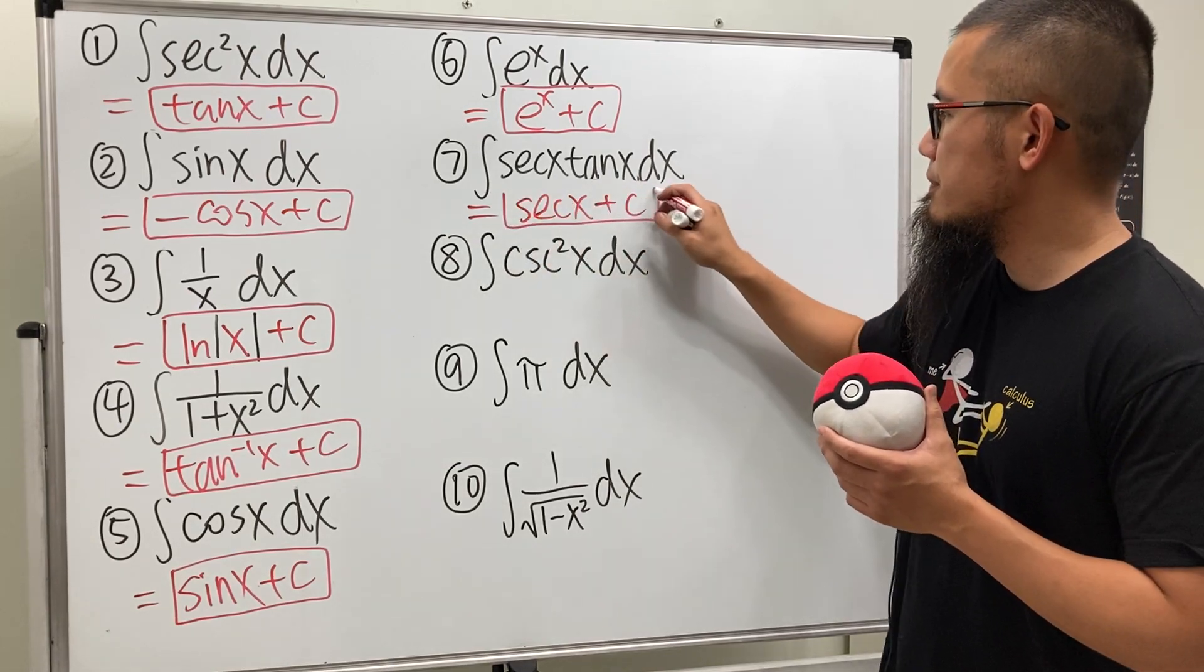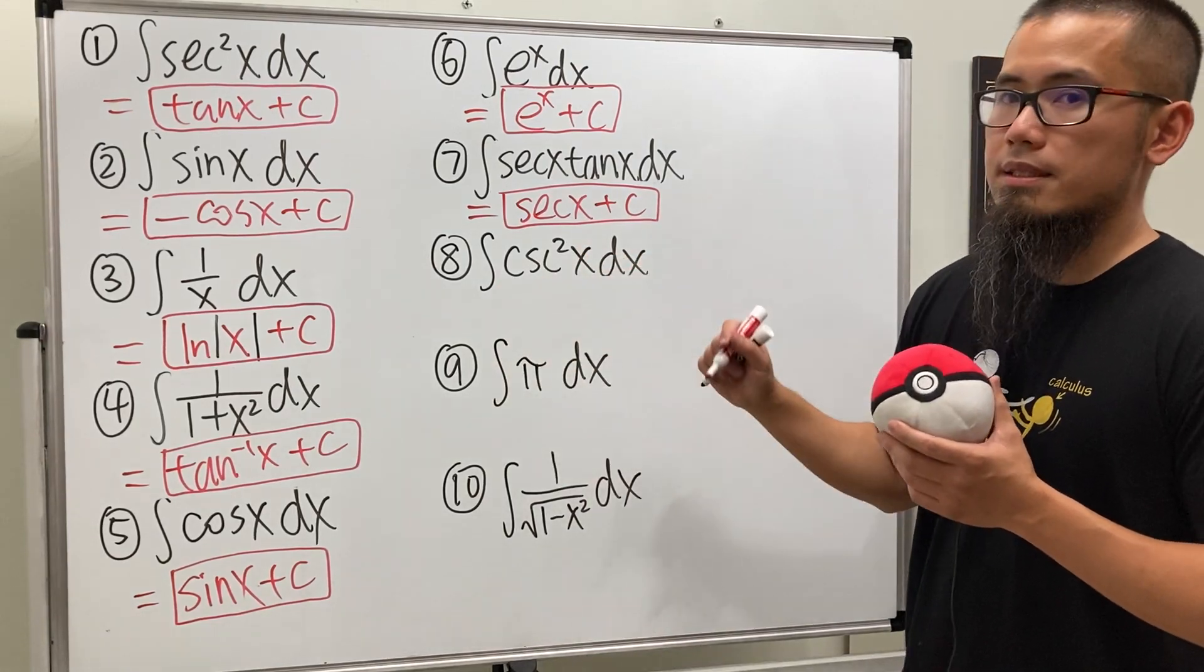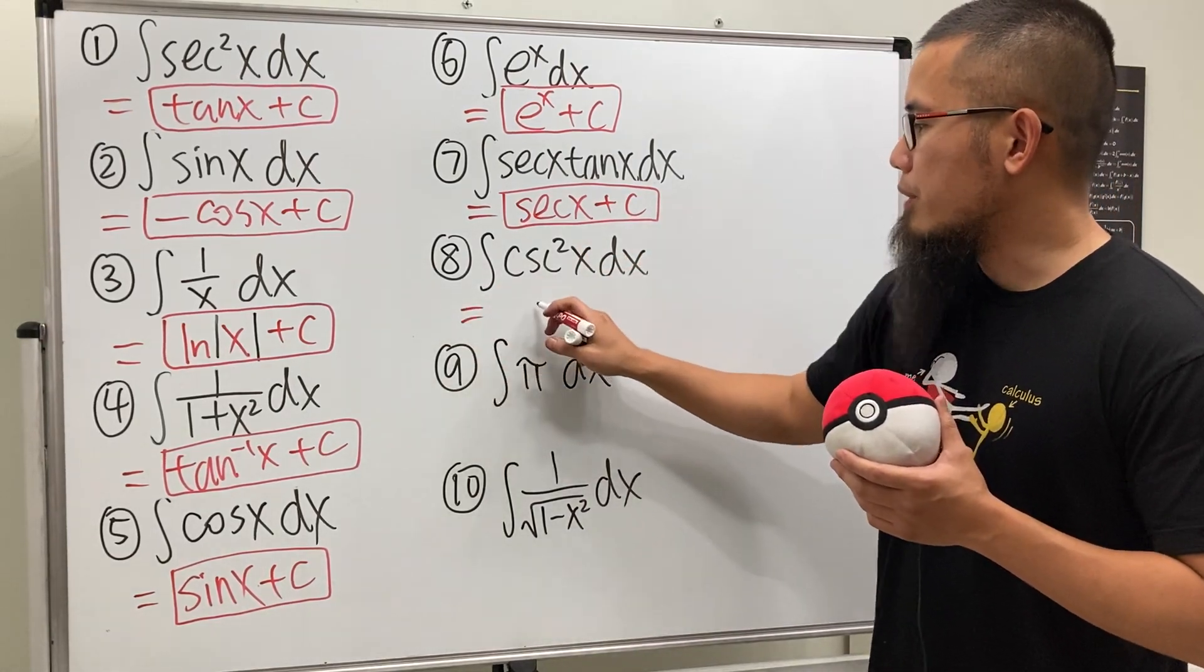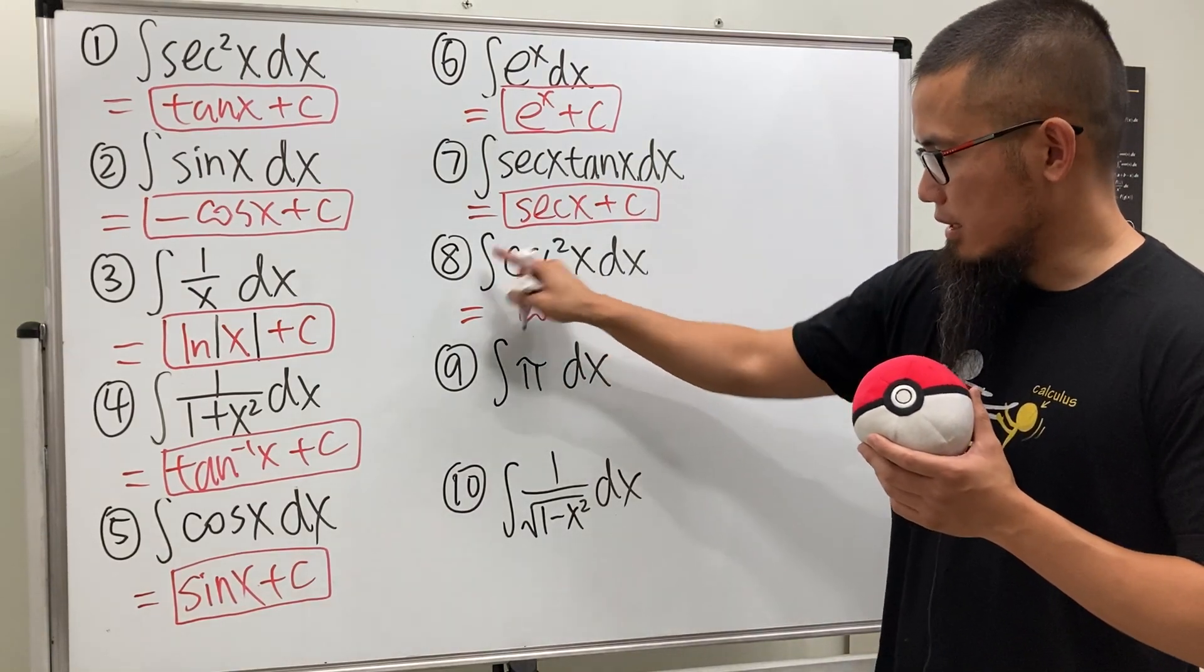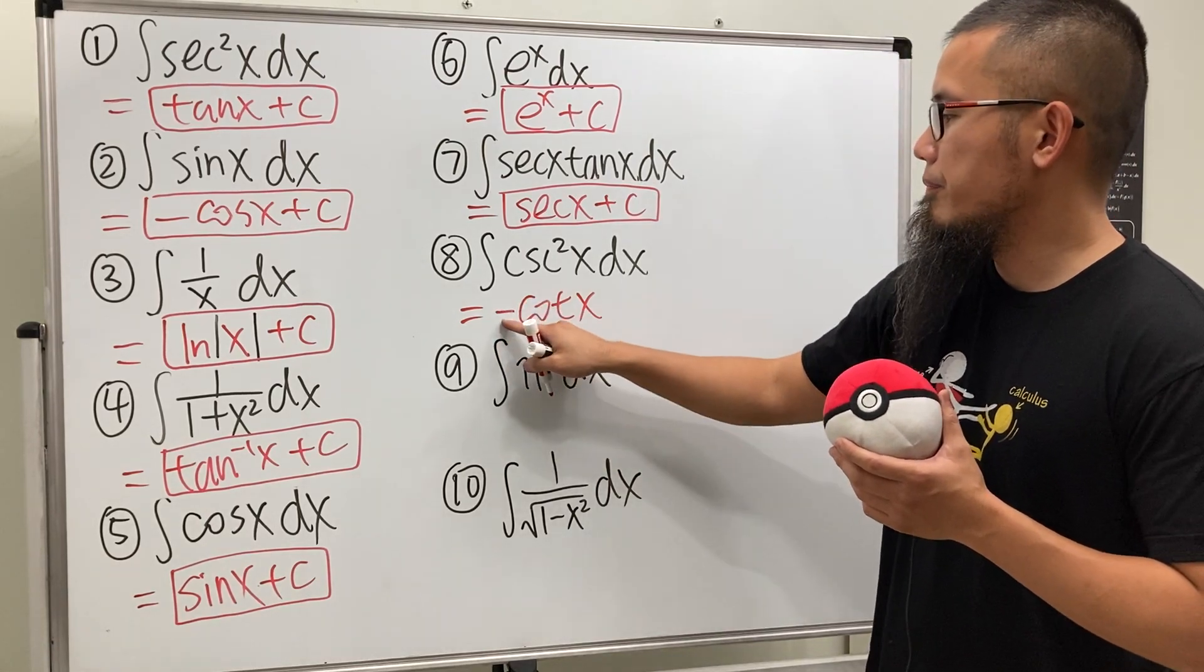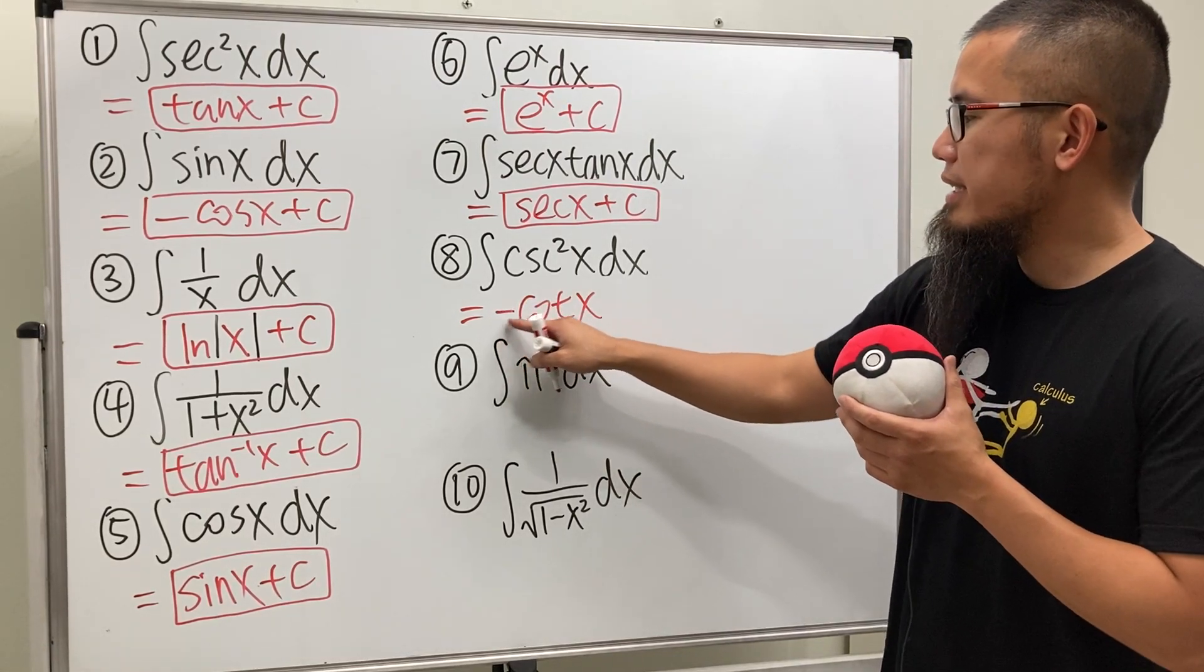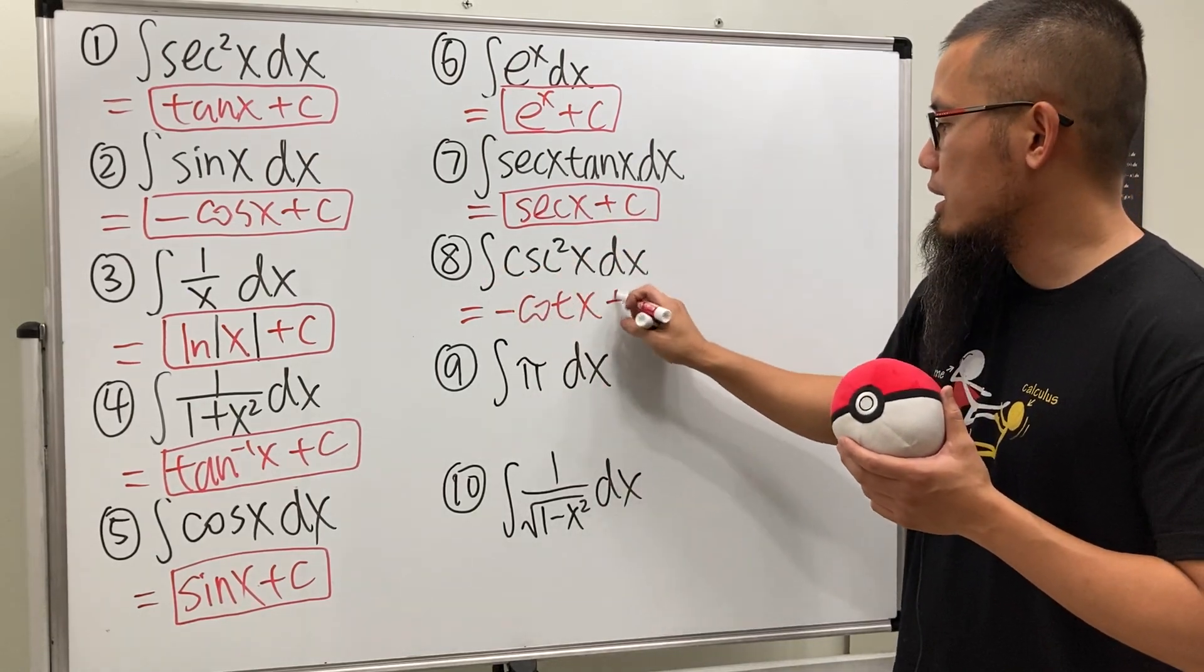Number eight, integral of cosecant squared x. We remembered that if we differentiate cotangent x that will give us negative cosecant squared, so we actually need a negative here. When we differentiate negative cotangent x we will get positive cosecant squared x, and then plus C. Very nice.